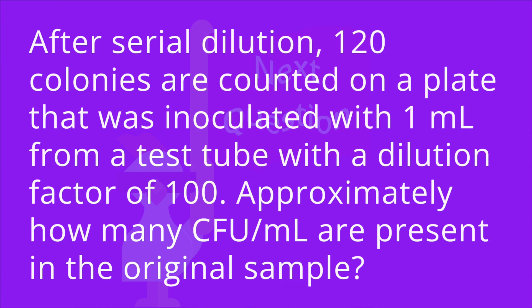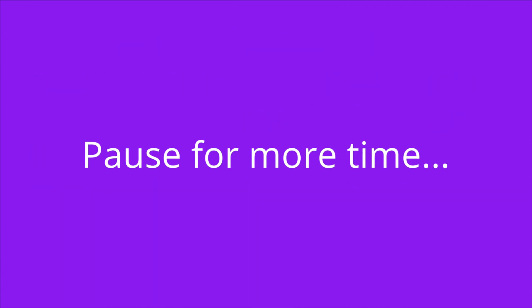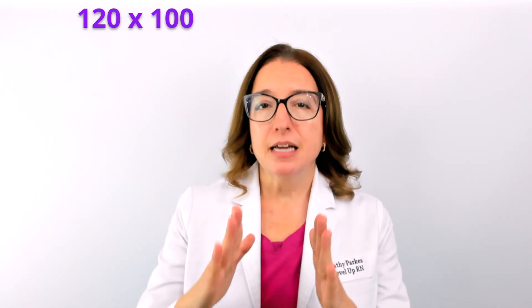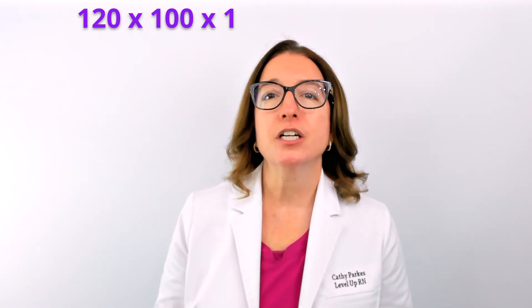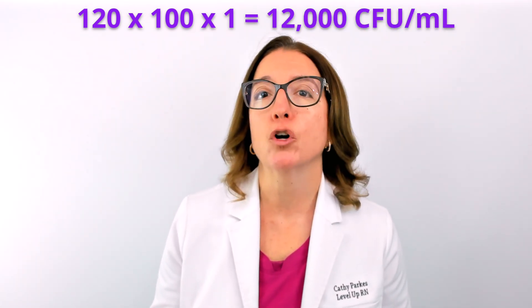Question number two: after serial dilution, 120 colonies are counted on a plate that was inoculated with 1 milliliter from a test tube with a dilution factor of 100. Approximately how many colony-forming units per milliliter are present in the original sample? To calculate this, you take the number of colonies times the dilution factor times the volume of the sample inoculated onto the plate. So we have 120 times 100 times 1. The answer is 12,000 colony-forming units per milliliter.